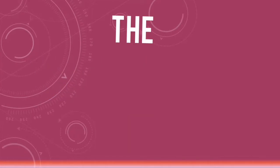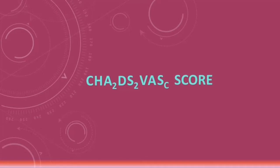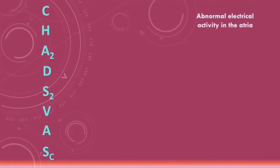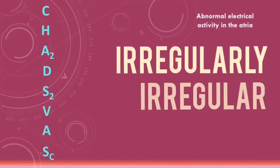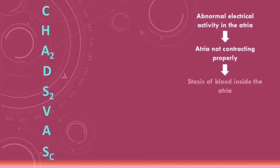The CHADS-VASc score can be used to determine the stroke risk in patients with atrial fibrillation. Atrial fibrillation increases the risk of stroke because it leads to abnormal electrical activity in the atria, causing the heart to beat with an irregularly irregular rhythm. This also causes the atria not to contract properly, leading to stasis of blood inside the atria. Blood stasis increases the risk of thrombi forming, which can embolize to areas including the brain and cause an ischemic stroke.